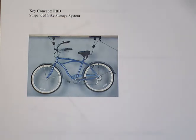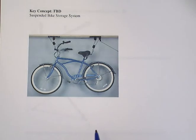In this second example about free body diagrams, we're going to look at what looks like another bike, but actually we're going to focus on the suspension system, the storage system, that really turns out to be just rope and pulleys.